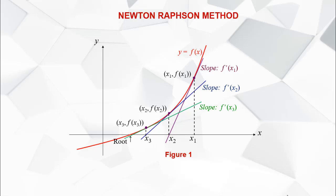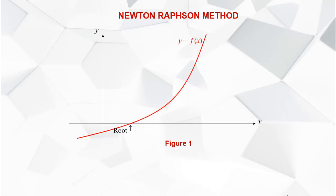The method is applicable if f(x) is continuous and differentiable. Figure 1 shows the graphical illustration of the Newton-Raphson method. The numerical scheme starts by choosing the initial point, denoted by x sub 1, as the first estimation of the solution.